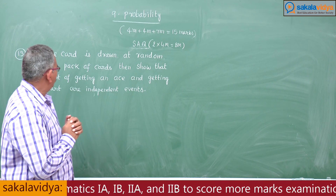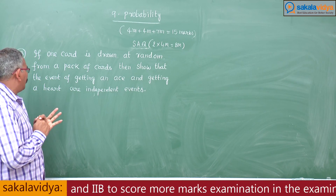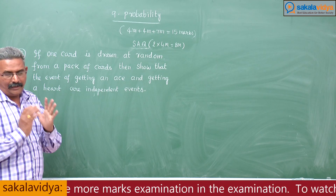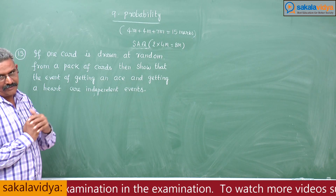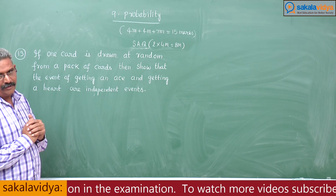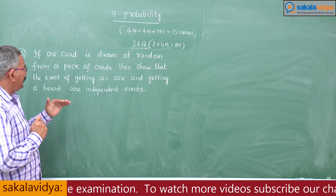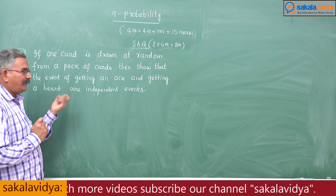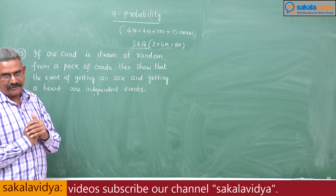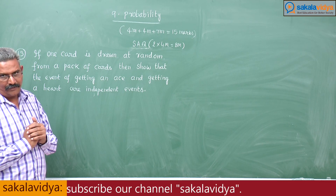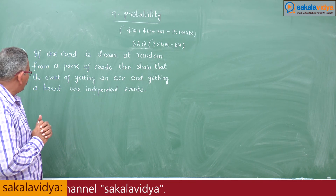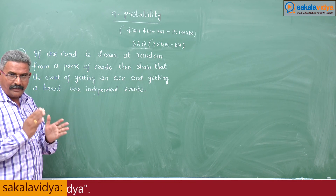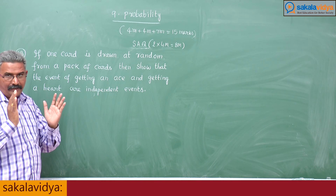Suppose, let A be the event of getting an ace from the pack of cards. Let B be the event of getting a heart from a pack of cards. Then what we have to show is that both the events A and B are independent events.